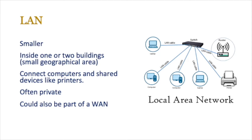LANs tended to be a lot smaller than wide area networks, normally inside one or two buildings, and the idea was that you connect computers and share devices like printers. Often this was very private, and it could be a part of a WAN — you could have a lot of local area networks connecting together to form a wide area network. This is the typical LAN you see in organizations such as schools and offices. The key thing to remember is that LANs have a small geographical area, and that is a critical and important distinction from the wide area network.